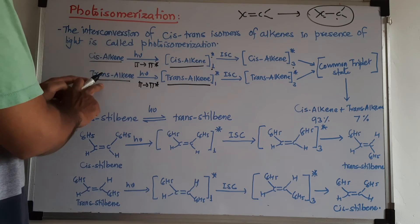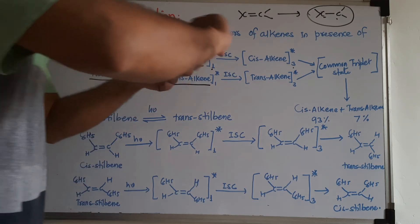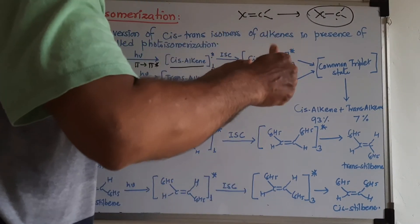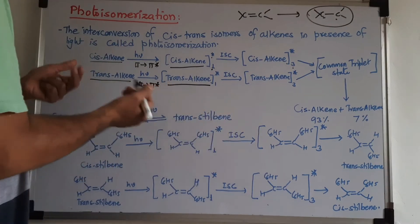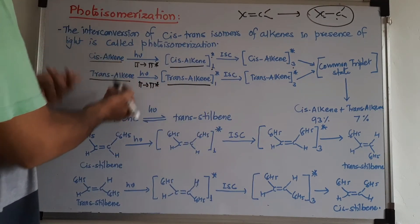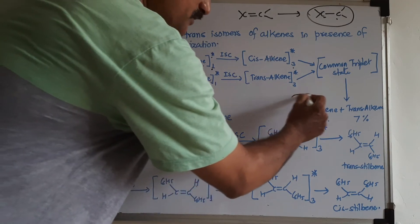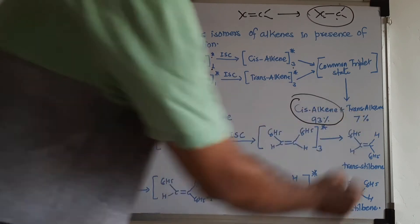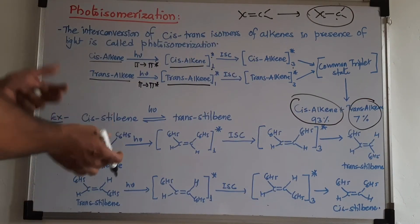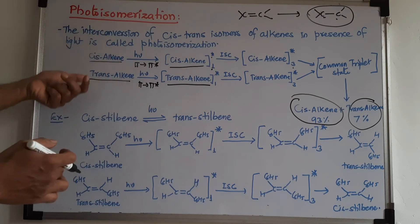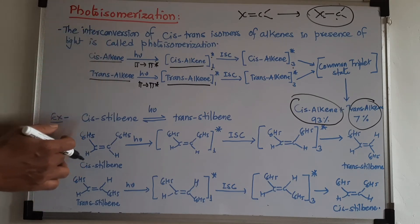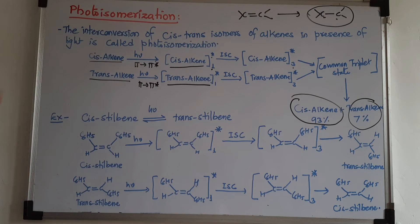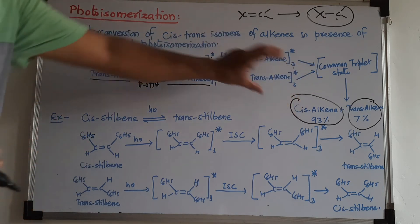Because of this rotation between the carbon-carbon single bond, one isomer is converted to another — cis is converted to trans and trans is converted to cis. After the biradical rotation, we can convert the cis isomer to trans or trans to cis. Notably, 93% of the product is cis and only 7% is trans. This interconversion is called isomerization, and since it takes place in presence of light, it is called photoisomerization.